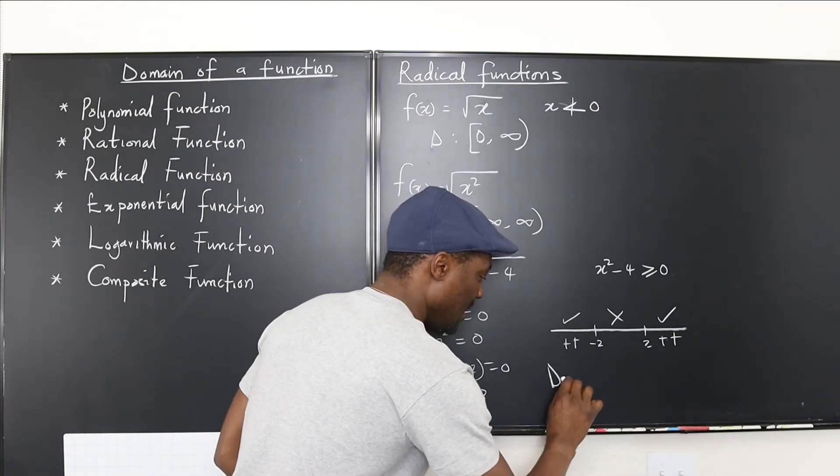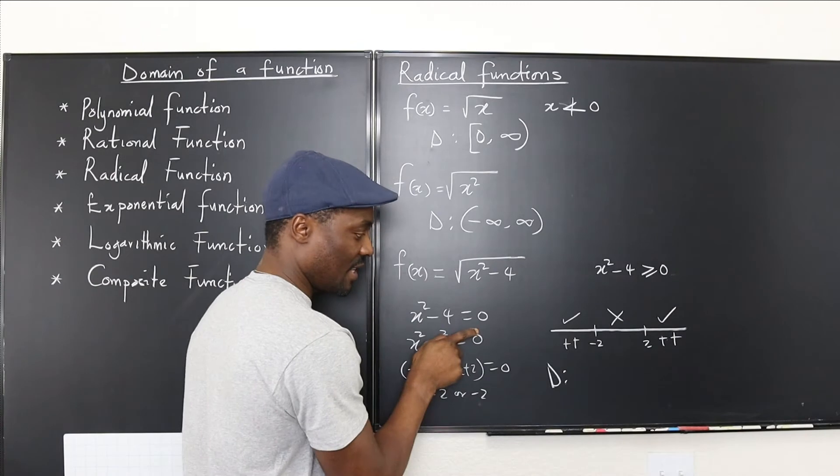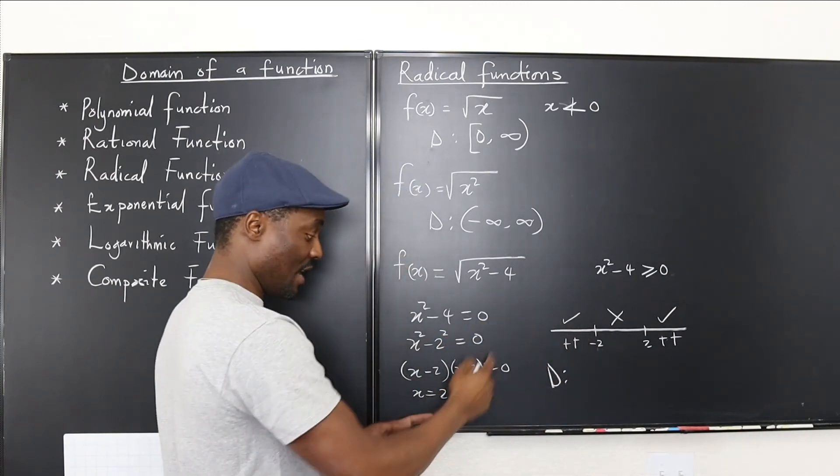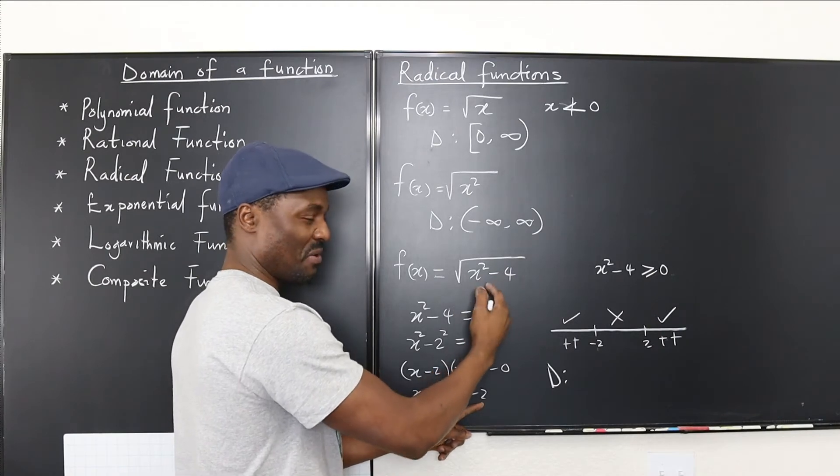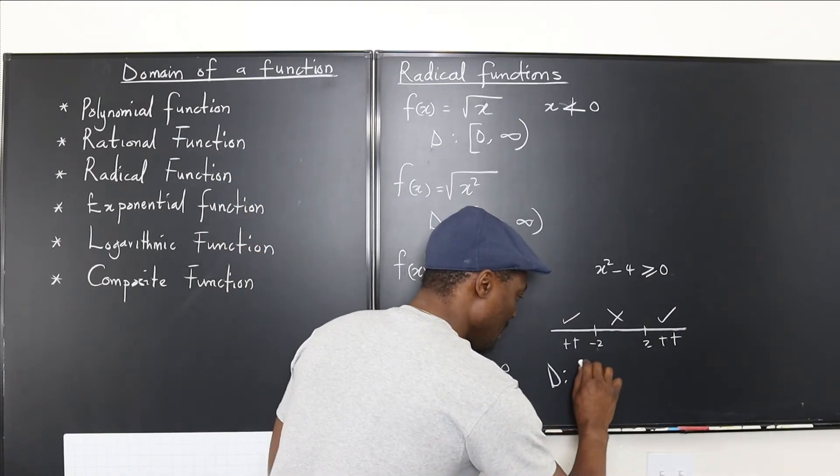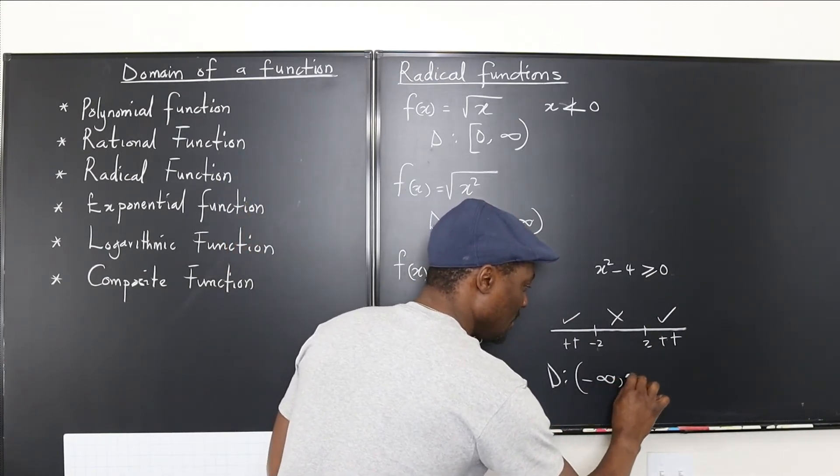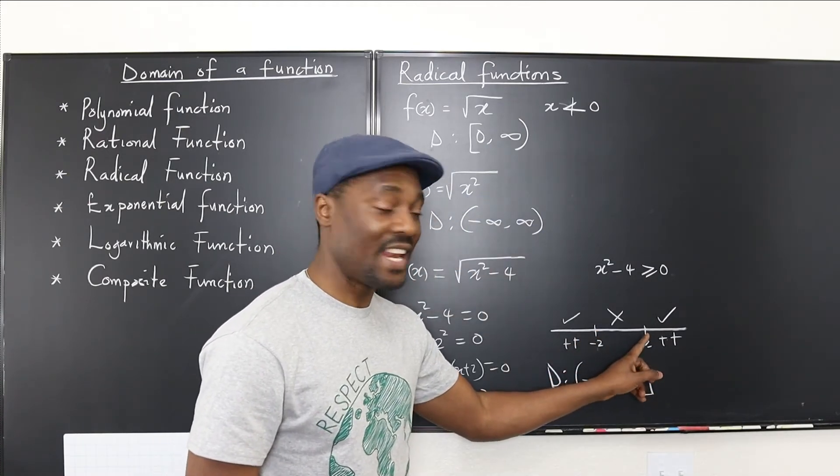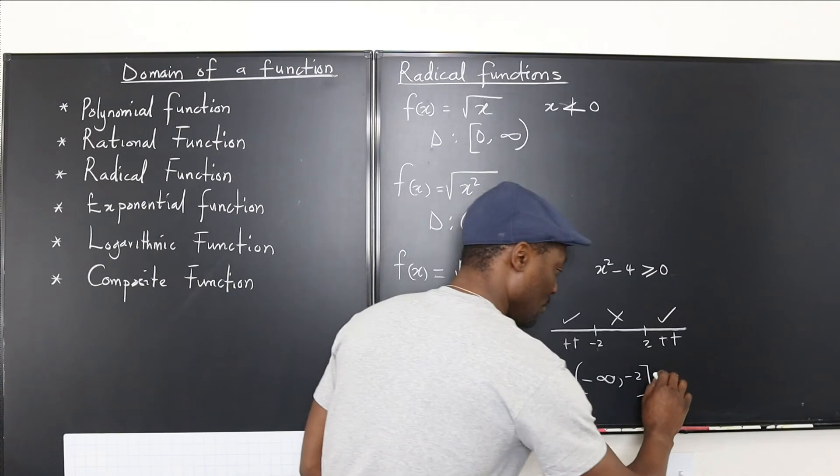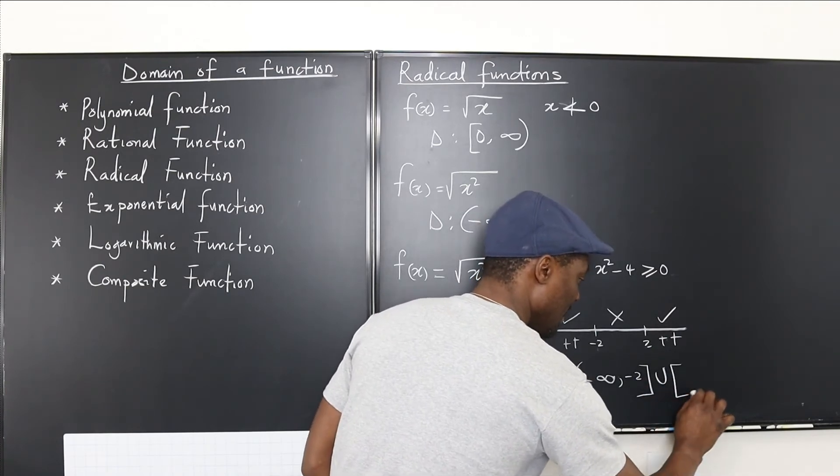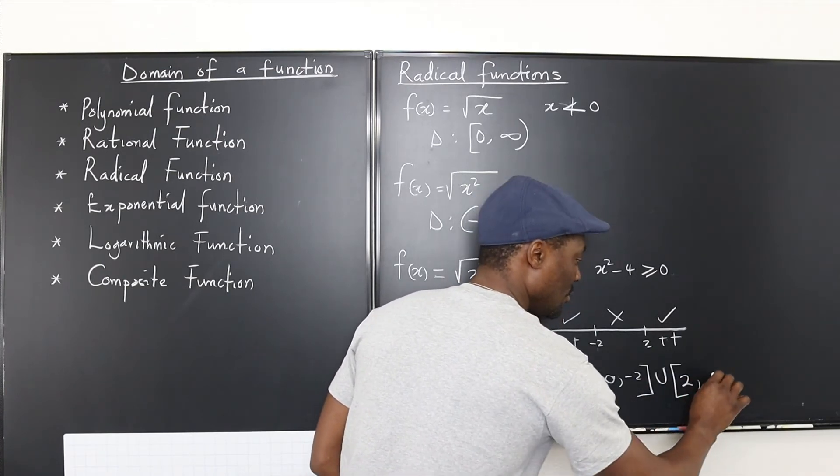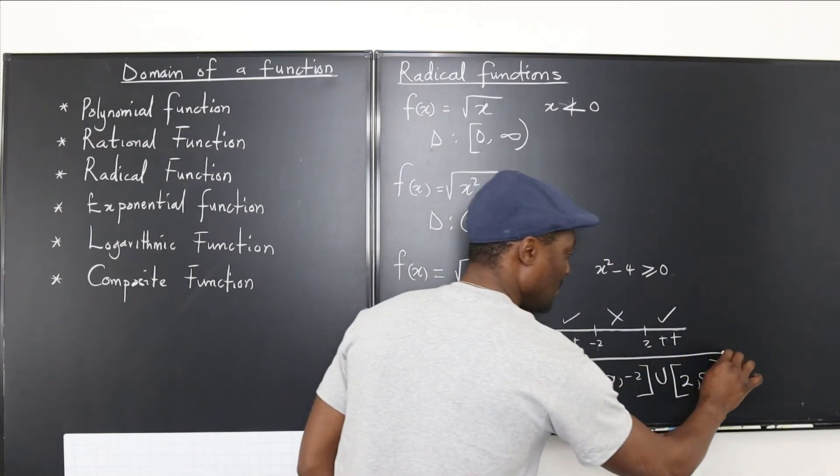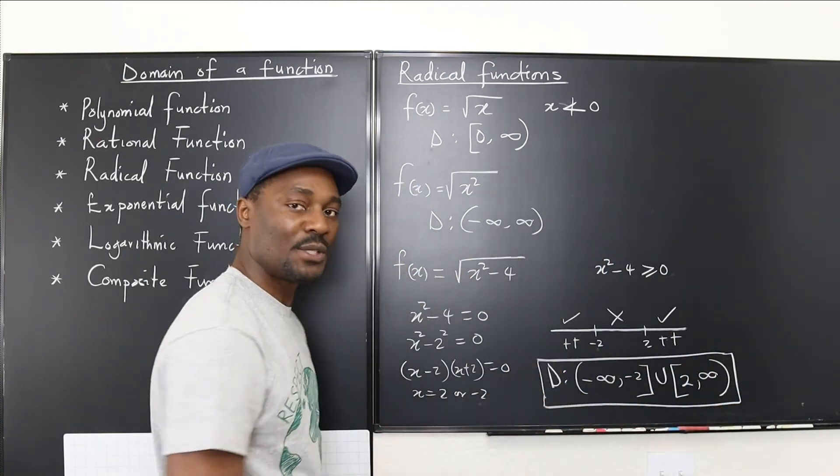So we can write our domain now and say that the domain of this function is everything coming all the way until you get to negative 2. And you can include negative 2 because if you put negative 2, it makes this function zero. And you can take the square root of zero. So it will be from negative infinity to negative 2. Then you skip to here. Then you start here again. And you can also include 2 because it will be union of this to positive infinity.